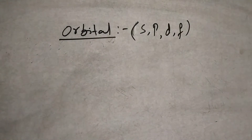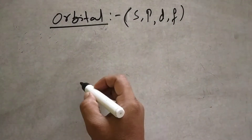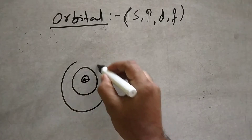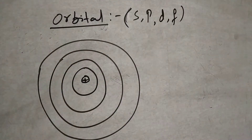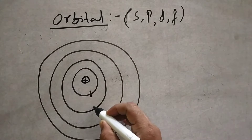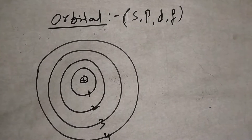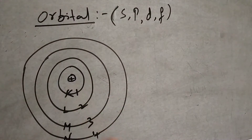These orbitals are present in orbits. What is an orbit? Orbit means electrons revolve around the nucleus in a closed circular path — this is called an orbit. This is the first orbit, second orbit, third orbit, fourth orbit. It is also known as K, L, M, N.